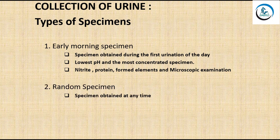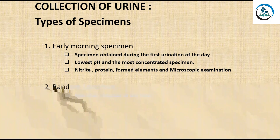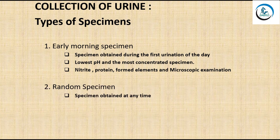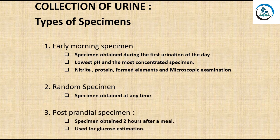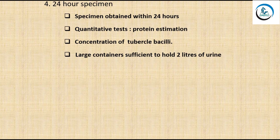The second type is the random specimen, obtained at any time. For routine urine examination, this type of specimen is usually adequate. The third is the post-prandial specimen, obtained two hours after a meal, and is used for glucose estimation — for example, in the glucose tolerance test and glucose challenge test.